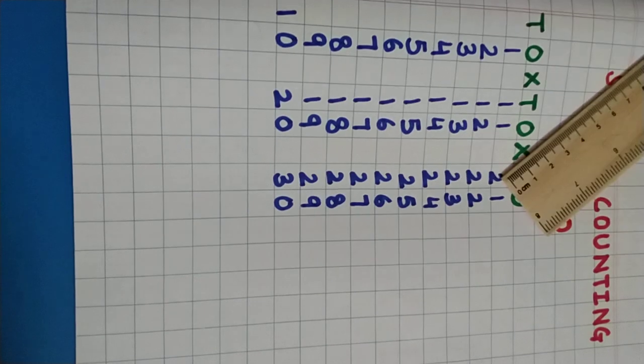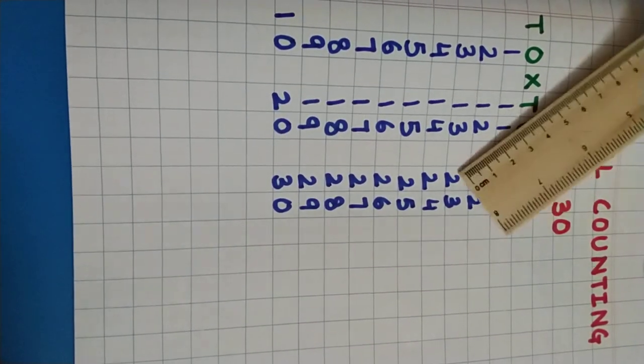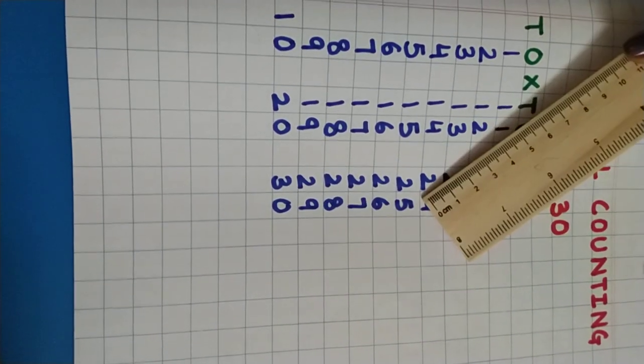2 tens, 20. 20 and 1, 21. 20 and 2, 22. 20 and 3, 23. 20 and 4, 24. 20 and 5, 25.